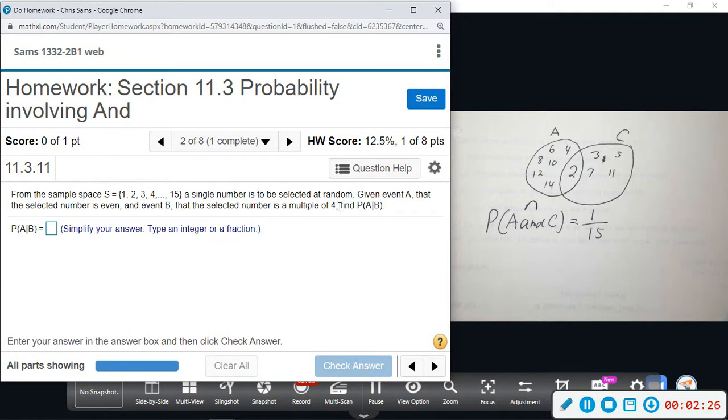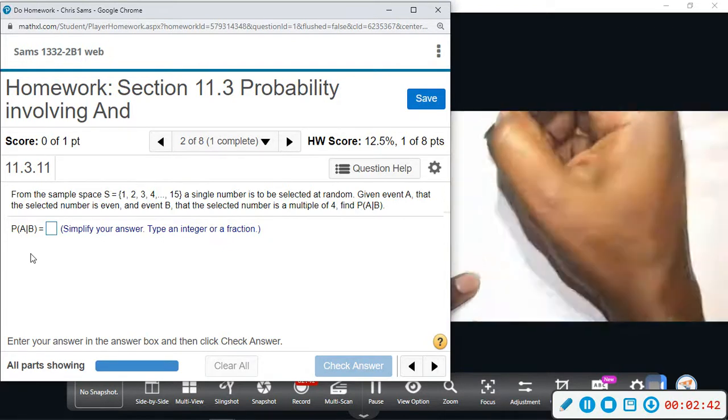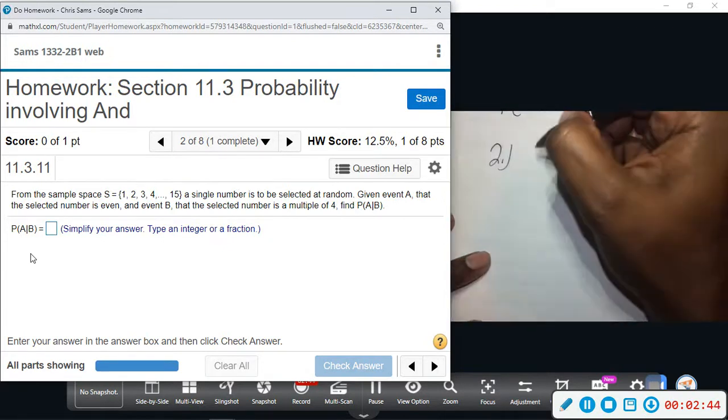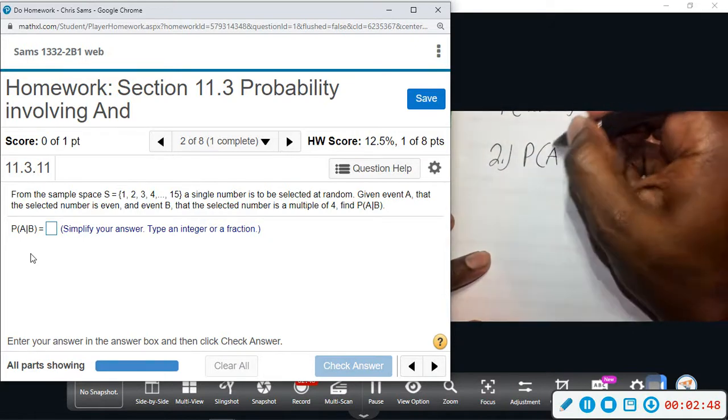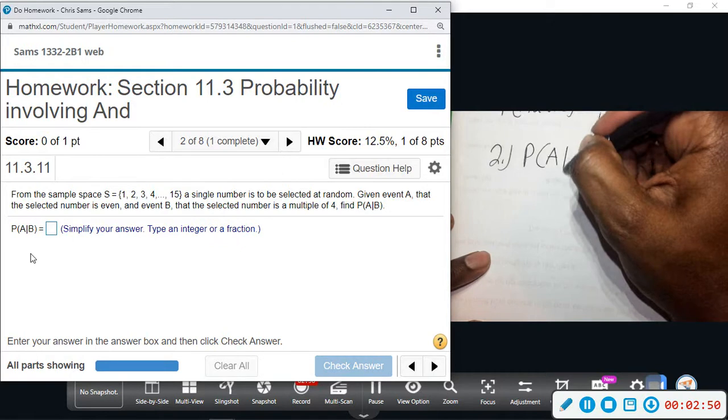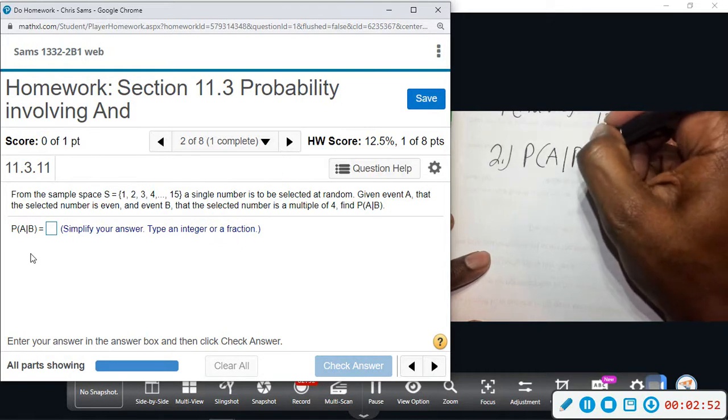Number two says from the sample space one through 15, a single number is selected. Given A, the number is even, and B, the number is a multiple of four, find the probability of A given B. So A given B is conditional probability.